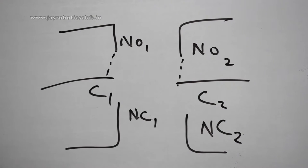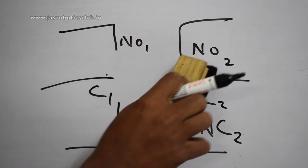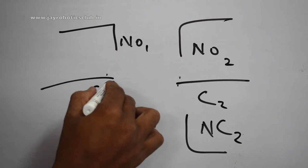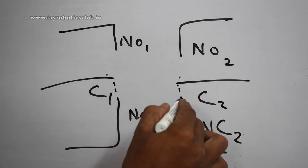While you switch off, what happens is this C1 will come in contact with NC1 and C2 will come in contact with NC2.